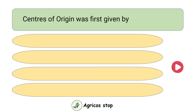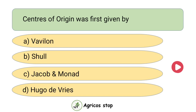Centers of origin were first given by? Options are Vavilov, Shell, Jacob and Monad, and Hugo de Vries. The answer is Vavilov. Centers of origin were first given by Vavilov.